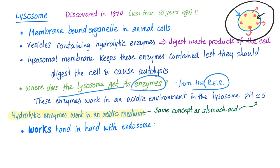These enzymes work in an acidic environment — that's the nature of hydrolytic enzymes. The pH inside the Lysosome is around 5 or maybe less, similar to the concept in your stomach. The stomach needs an acidic environment so that its enzymes can work and digest protein. Same stuff.